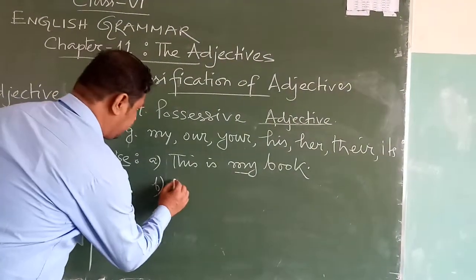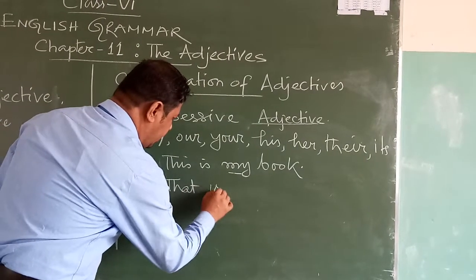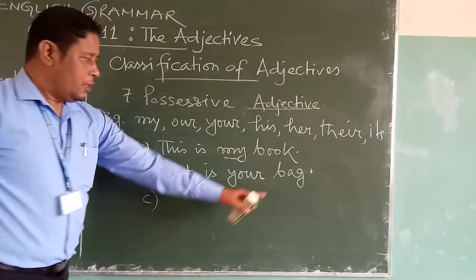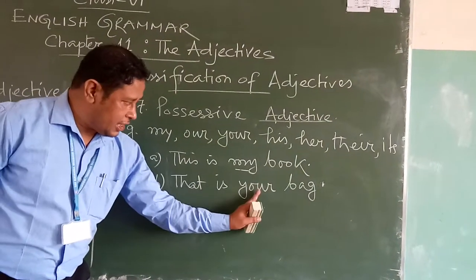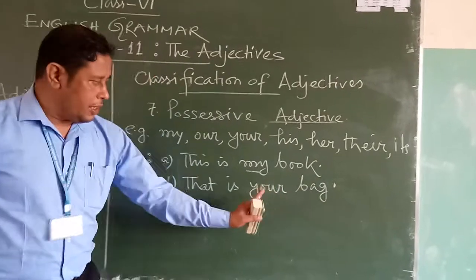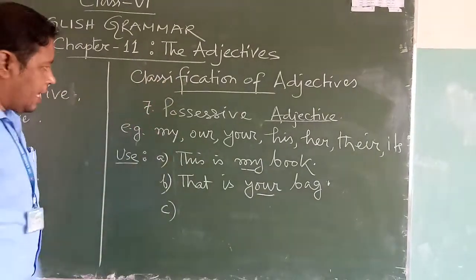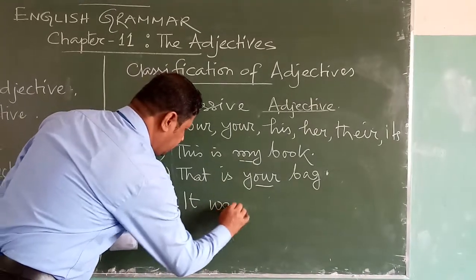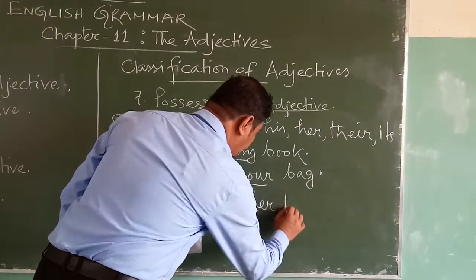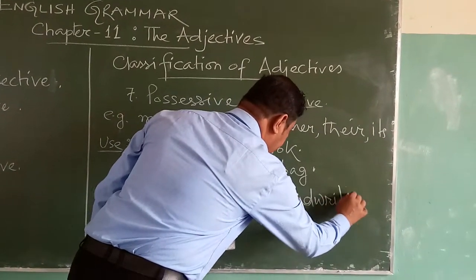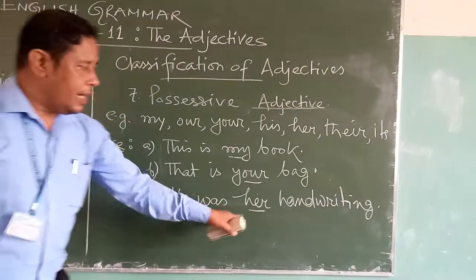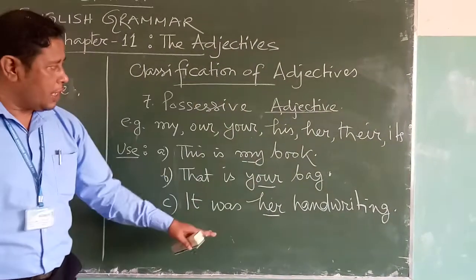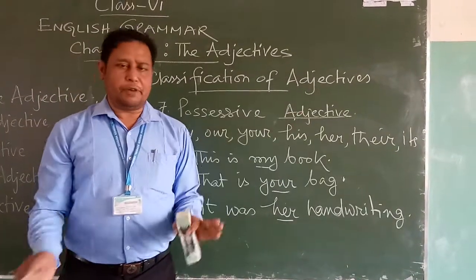In the second example: 'That is your bag.' The bag belongs to you, and this adjective is followed by another noun — it is 'bag.' So it is a possessive adjective. In the third example: 'It was her handwriting.' This handwriting belongs to her, that is why it is a possessive adjective. This way you can explain possessive adjective.